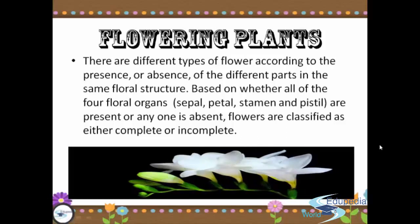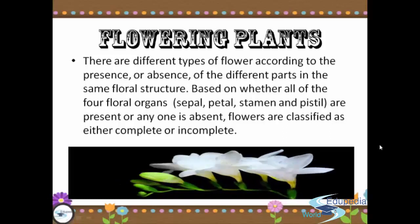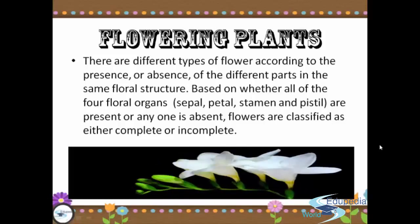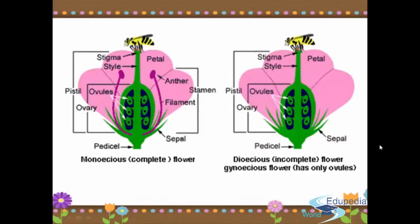Flowering plants have different types of flowers according to the presence or absence of different parts in the same floral structure, based on whether all of the floral organs — sepal, petals, stamen, and pistils — are present or any one is absent. Flowers are classified as either complete or incomplete. As you can see in the picture, we have the complete flower and also the incomplete flower, also called monoecious and dioecious.